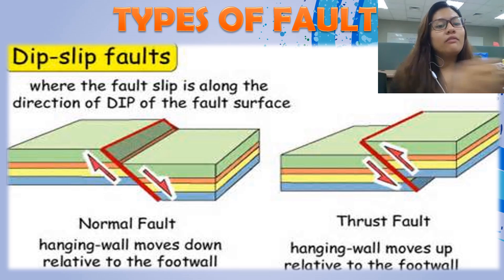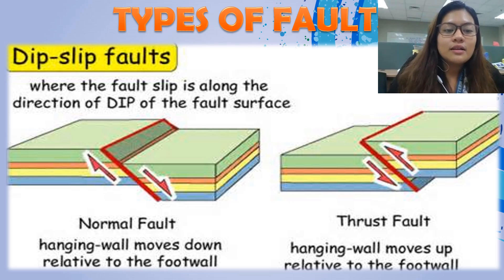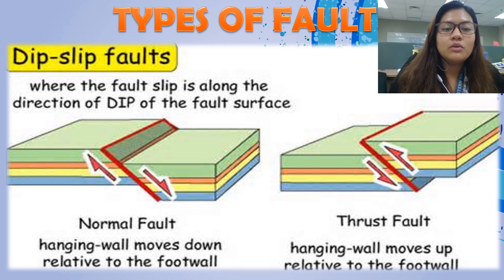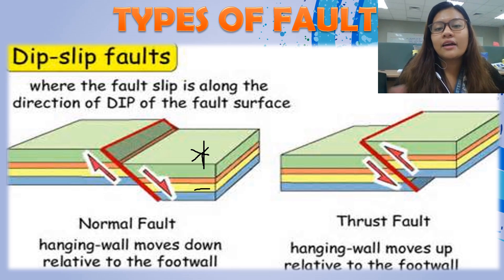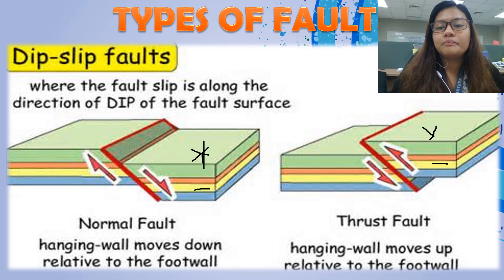In normal fault, you can see that the hanging wall moves down — this is the hanging wall. In thrust fault, the hanging wall actually goes up.